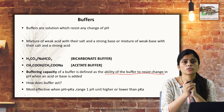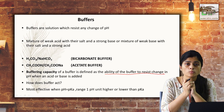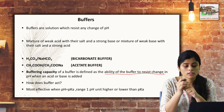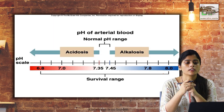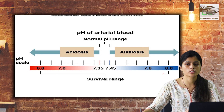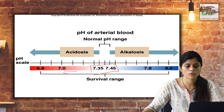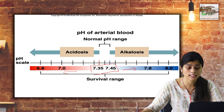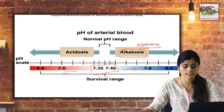The most effective buffer is the one whose pKa is almost equal to the physiological pH of the body — that is, the blood pH. This picture shows the normal pH range. Below this range it is acidic, above it is alkaline. If the pH is increased, it is known as alkalosis or alkalemia; if decreased, it is known as acidosis or acidemia.